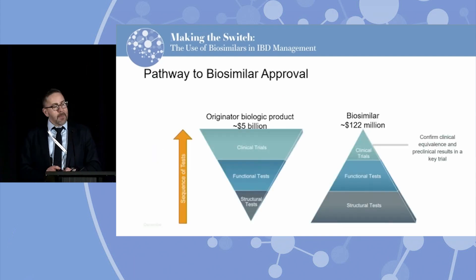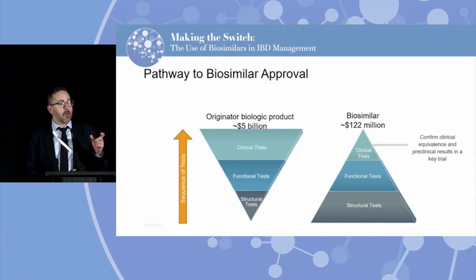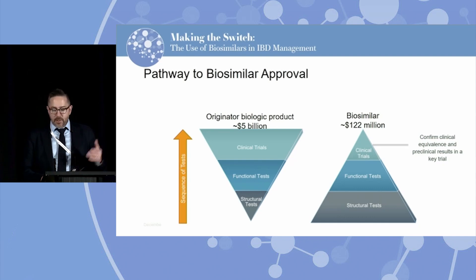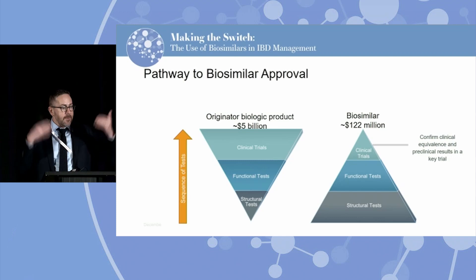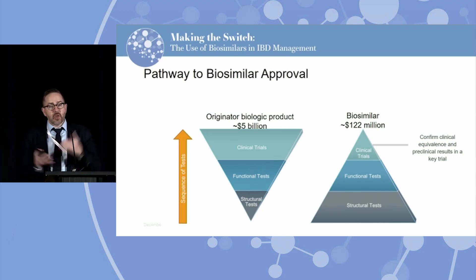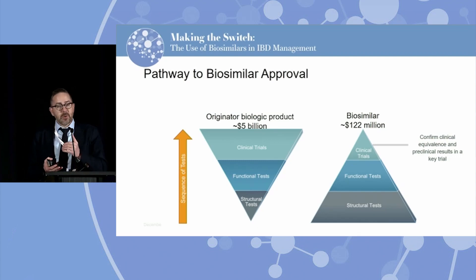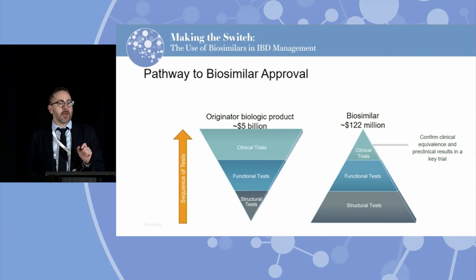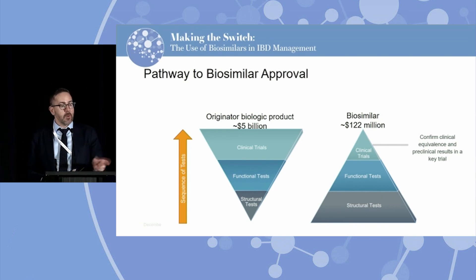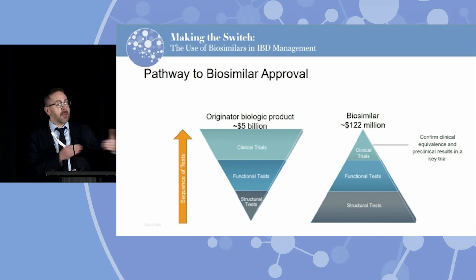How do they get approved? The pathway is a bit different. If you're going to get an originator monoclonal antibody approved, it's a long, slow process of clinical trials, functional tests, and structural tests — but most of the effort is in getting clinical trials done. That's flipped for biosimilars: most of the work is showing how similar it is to the reference product, doing functional assays in the lab to show similar behavior. The smallest part is having a clinical trial for an indication, where you just must show equivalence in efficacy and safety — and that can be in any indication: RA, UC, or Crohn's disease.